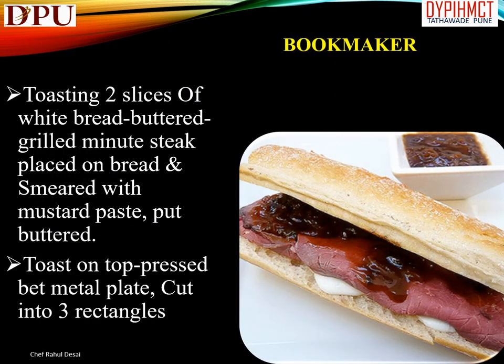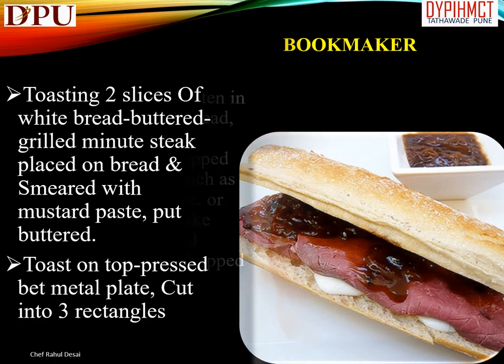Bookmaker sandwich: two slices of white bread are toasted and buttered; a grilled minted steak is placed on bread and smeared with mustard paste. Buttered toast is put on top, pressed with a metal plate, and cut into three rectangles.